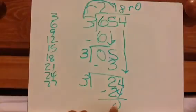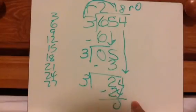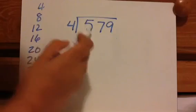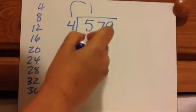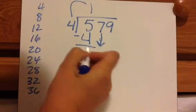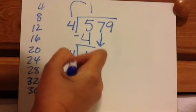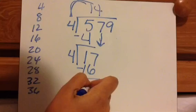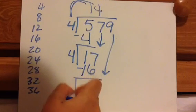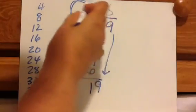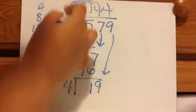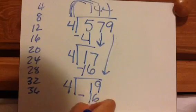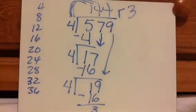But let's say there was a 5 here and I got 0 — I have to bring that 5 down and repeat the steps again. So 4 goes into 5 one time. 1 times 4 is 4. 5 minus 4 is 1. Bring down the 7. 17 divided by 4 — 4 goes into 17 four times. 4 times 4 is 16. 17 minus 16 equals 1. Bring down the 9. 4 goes into 19 — actually, it goes in 4 times. 4 times 4 is 16. 19 minus 16 equals 3. So it's 144 remainder 3.